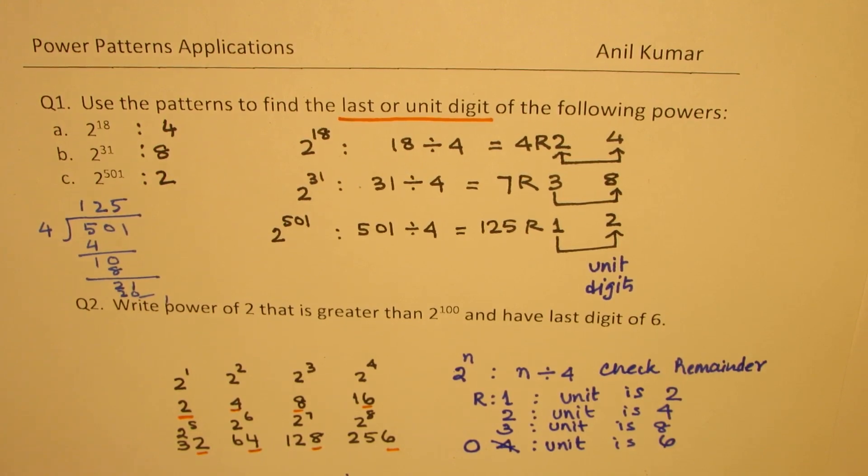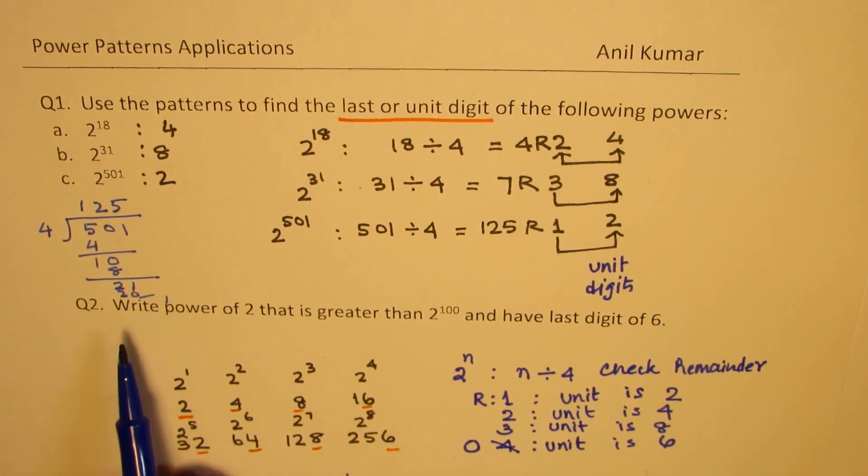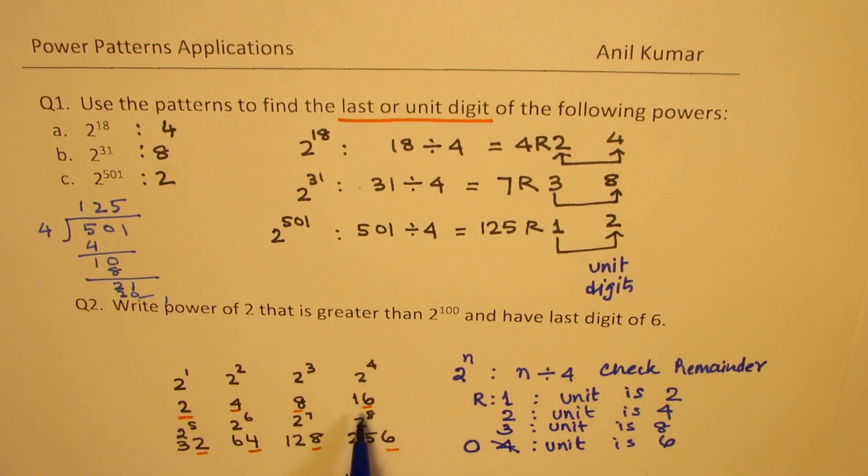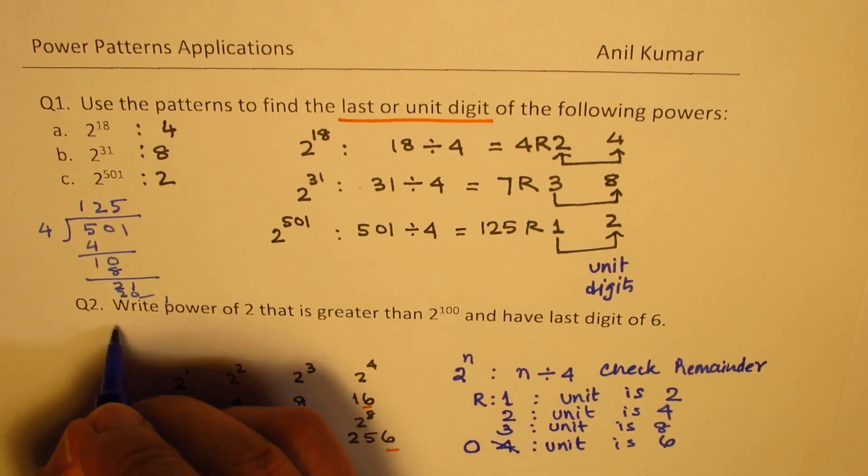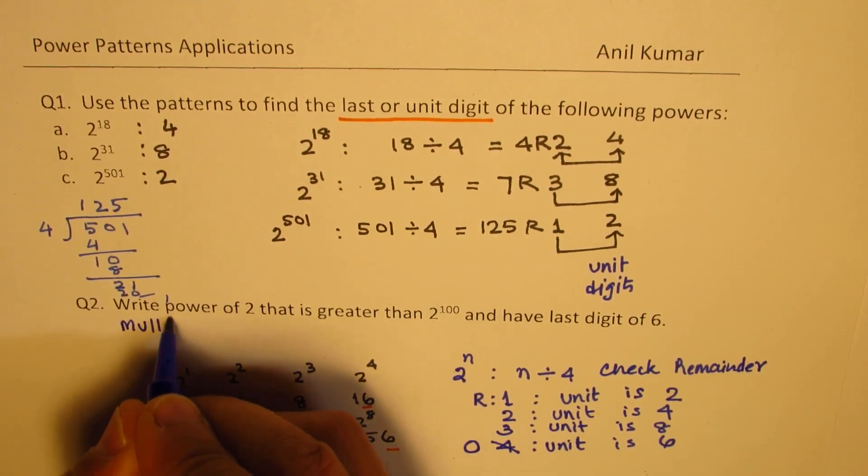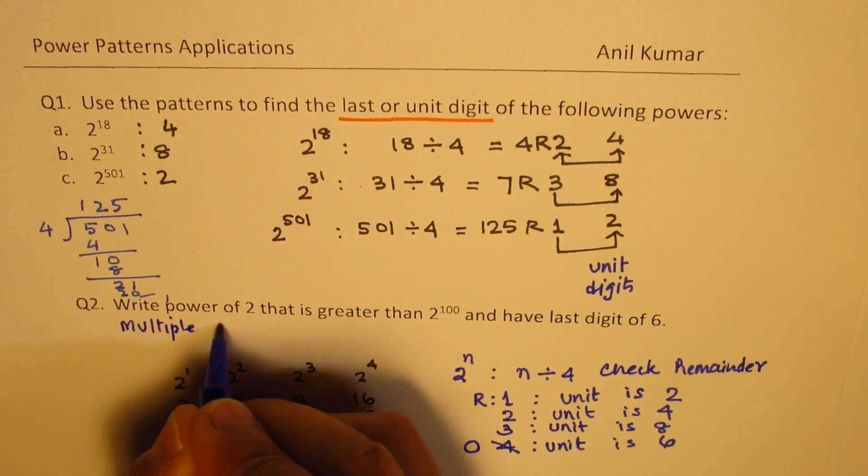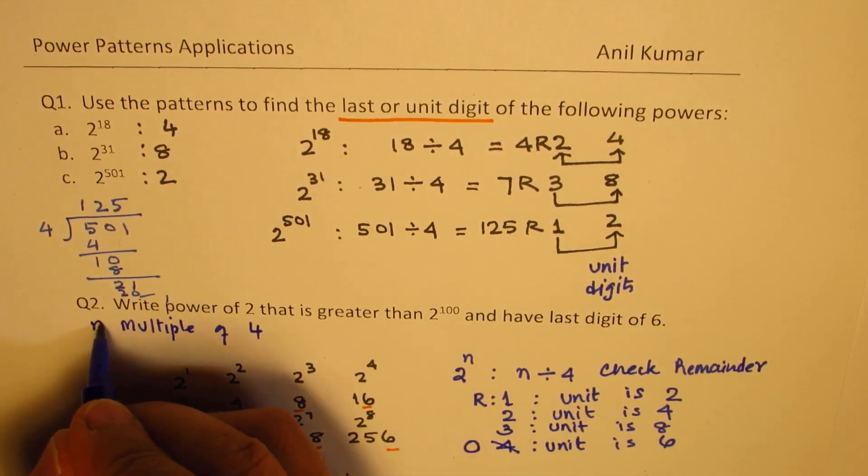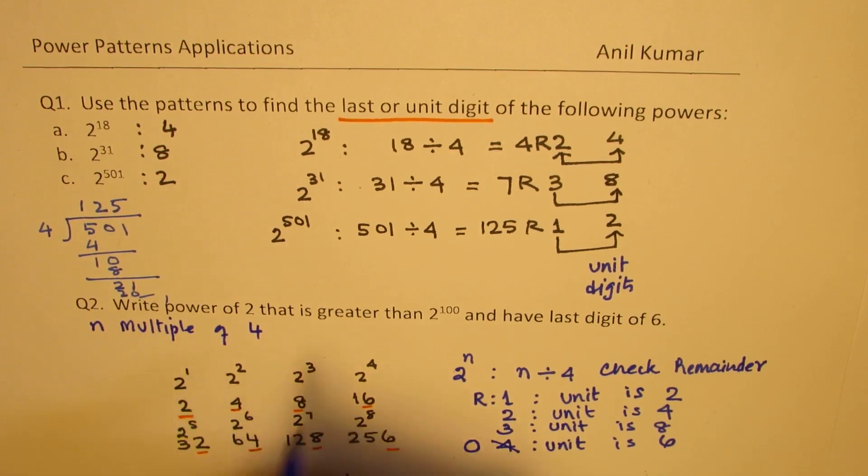Now, let's look into question number 2, which says write power of 2 that is greater than 2 to the power of 100 and have last digit of 6. Now, last digit of 6 means multiple of 4. The index or the exponent n is multiple of 4.